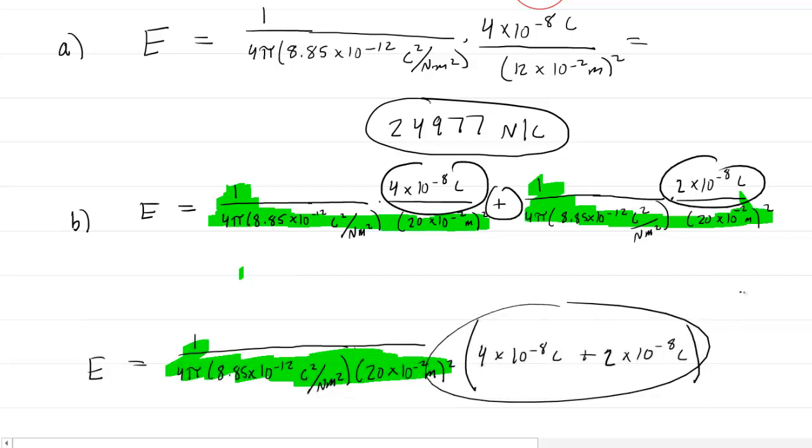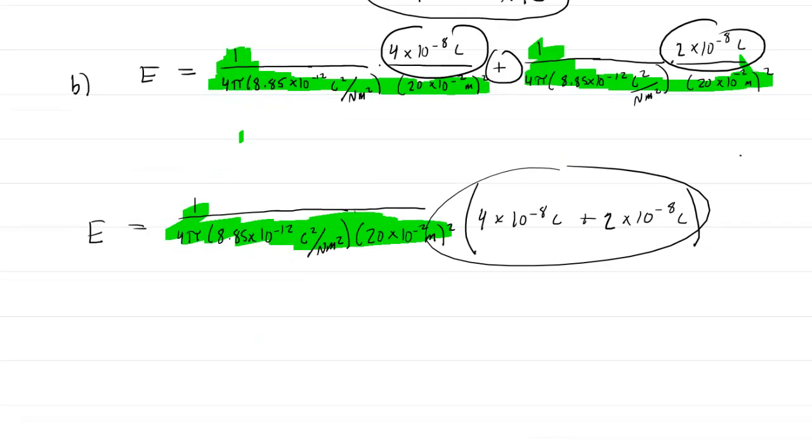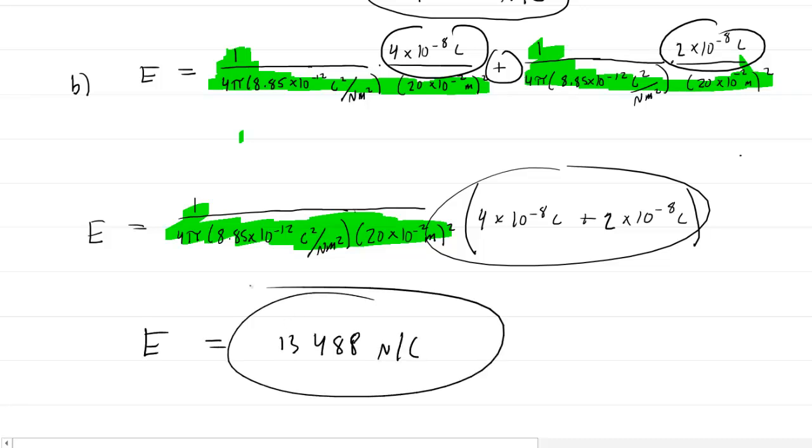We'll go ahead and punch this into our calculators, and when we do so we get an electric field equal to 13,488 newtons per coulomb. So this would be the correct answer for part B.